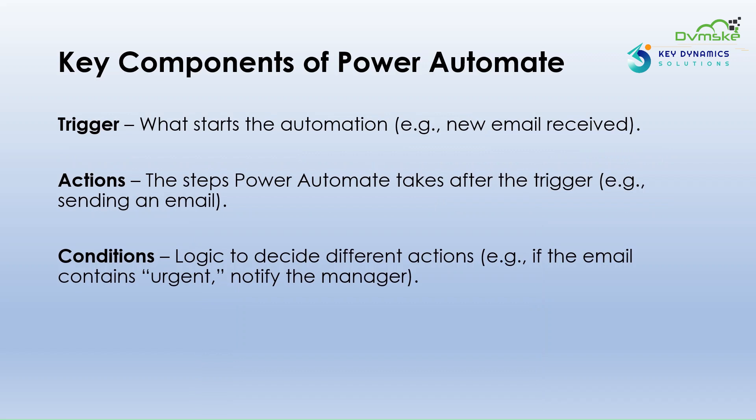Actions are the steps Power Automate takes after the trigger — for example, sending an automatic response. Conditions are the logic that decides different actions, like if the email contains 'urgent', notify the manager.